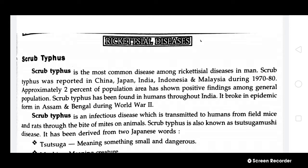Good morning. Today let us study about rickettsia diseases. The first one is scrub typhus. It is an infectious disease which is transmitted to humans from field mice and rats through the bite of mites. Scrub typhus is also known as Tsutsugamushi disease.